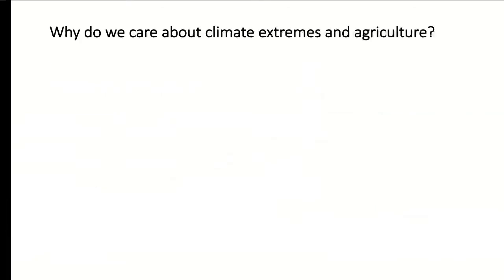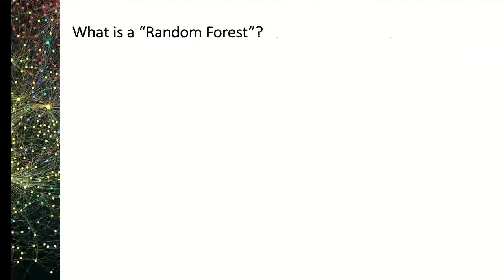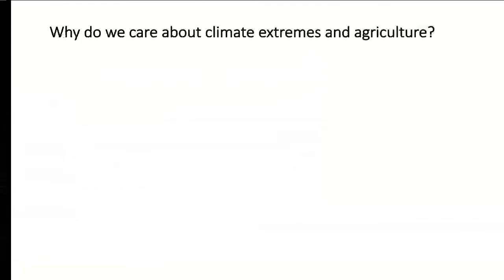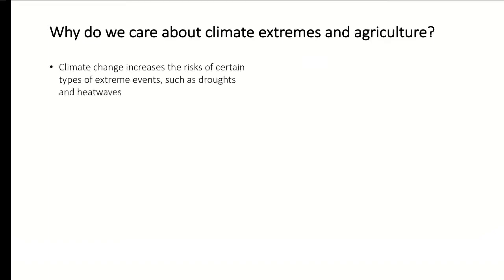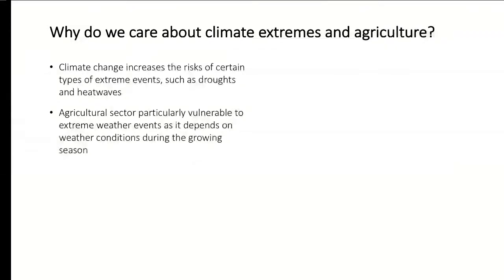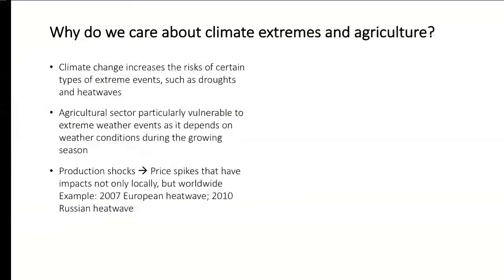But why do we care about the impact of climate extreme events and climate change on global agriculture? Climate change increases the risks of climate extreme events like droughts, floods, and heat waves. The agricultural sector is particularly affected because agricultural production depends on suitable weather conditions during the growing season. Production shocks that lead to harvest failures — the impacts are not only felt locally where they happen, but also worldwide.